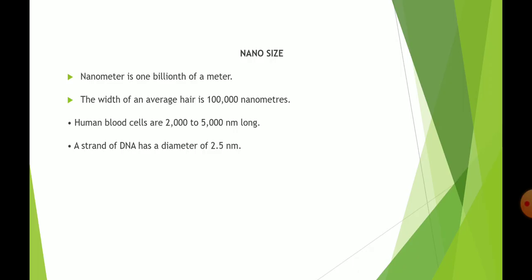A nanometer is one billionth of a meter. The width of an average hair is one lakh nanometers. Human blood cells are 2000 to 500 nanometers long. A strand of DNA has a diameter of 2.5 nanometers.